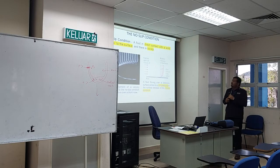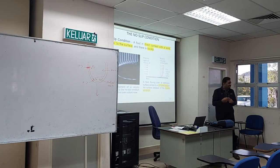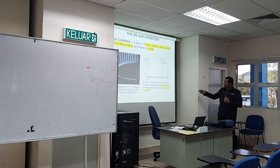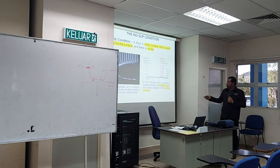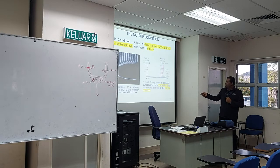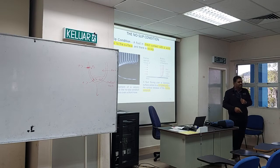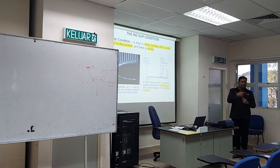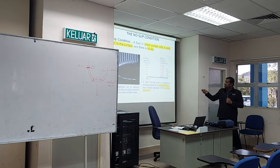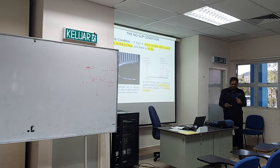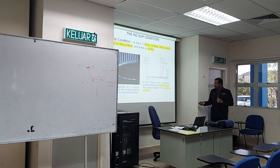No-slip condition: if you have a solid surface and a fluid moving over it, the layer in contact with the surface has zero velocity because of friction between the fluid and the surface. The layer above can move according to the flow, but the layer touching the surface creates zero velocity. This is what we call the no-slip condition.